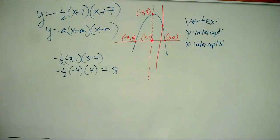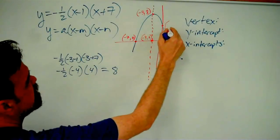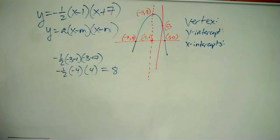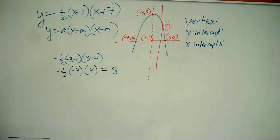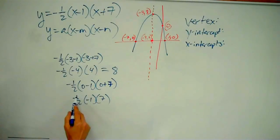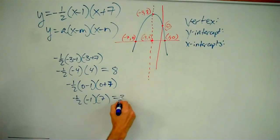Well, what is the y-intercept? The y-intercept is the point that has an x-coordinate of zero. So all I have to do is plug in zero for x and find out what y is. Negative one-half times zero minus one times zero plus seven is just negative one-half times negative one times seven, which is negative one-half times negative seven, which is positive three point five.